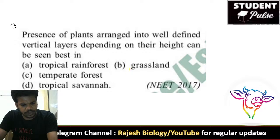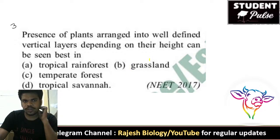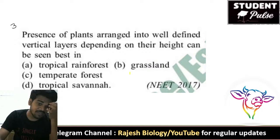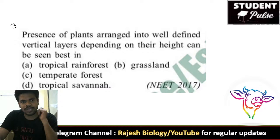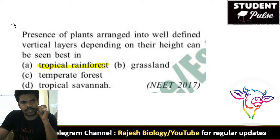For this question, the right answer is: presence of plants arranged into well-defined vertical layers depending on their height can be seen best in tropical rainforests — that is nothing but stratification, where plants are arranged based on their height.